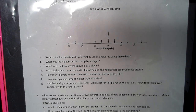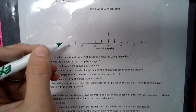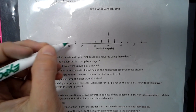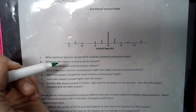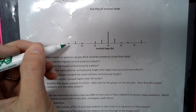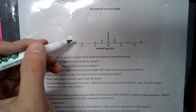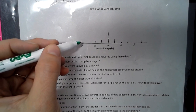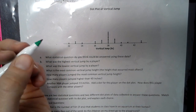So if we look at a dot plot, a dot plot is a statistical display where each dot represents whatever it is placed above. For instance, here we're talking about vertical jumps for some basketball players. We see that this is a 32-inch vertical jump, and one person can do that, whereas here at 33, we have two dots. Then we have 34, which is 1; 36, which is 2; 37, which has 3, and so on and so forth.